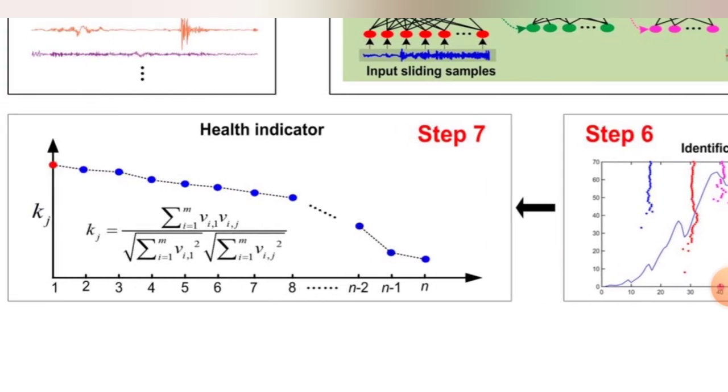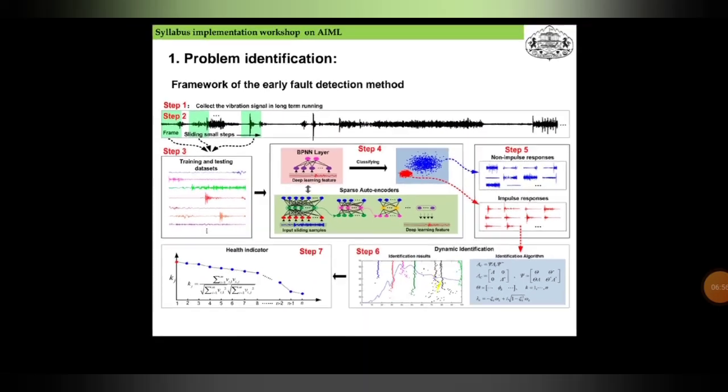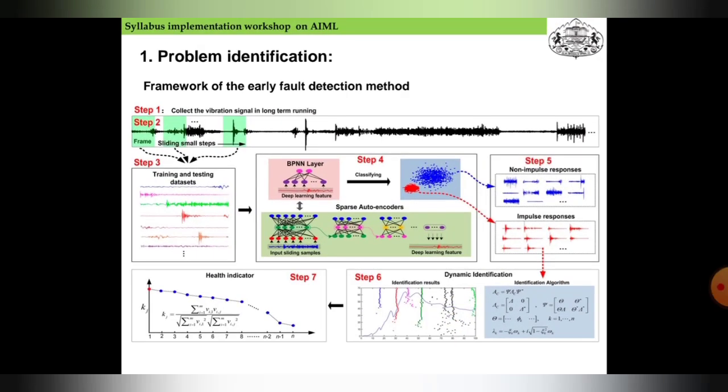Step 7 is the health indicator, widely used to find out how much life is left in the gear drive while doing these operations. This shows how machine learning is used in the framework of early fault detection methods.